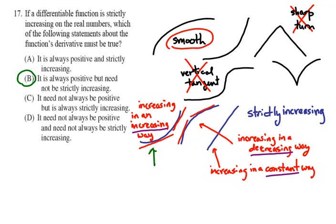Answer B says the derivative is always positive, but need not be strictly increasing — that matches the second example. Answer C says it need not always be positive but is always strictly increasing. Well, if the function itself is strictly increasing, then its derivative will always be positive, so C is out. Answer D says it need not always be positive and need not always be strictly increasing — that's no good either. So that does it for this problem. There are some very important calculus concepts embedded here that we've just gone over. Thank you.